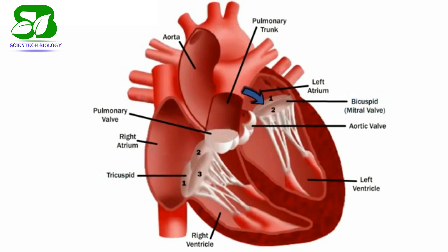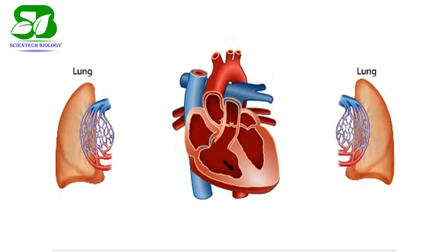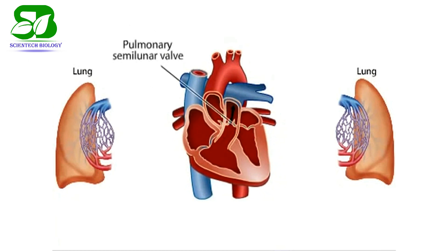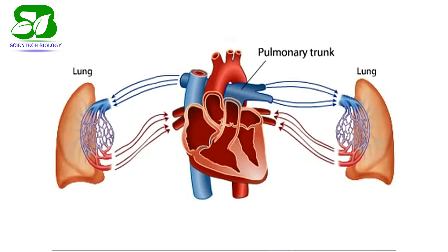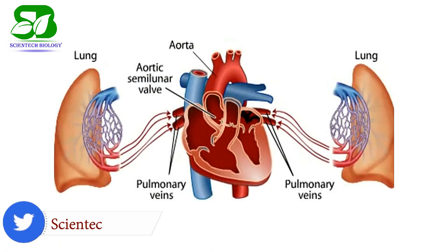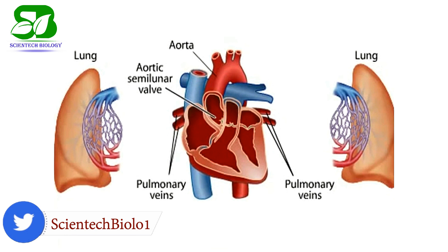The deoxygenated blood first enters the right atrium via the superior or inferior vena cava. The blood then passes to the right ventricle through the tricuspid valve. By the contraction of the ventricles, the blood then enters the lungs through the pulmonary semilunar valve. The oxygenated blood then returns to the left side of the heart. The oxygen-rich blood first enters the left atrium by the pulmonary vein, then passes to the left ventricle through the bicuspid valve. By the contraction of the ventricle, the oxygen-rich blood enters the aorta through the aortic semilunar valve.